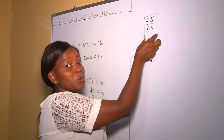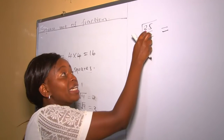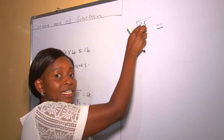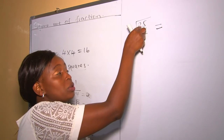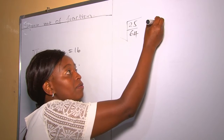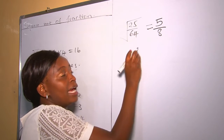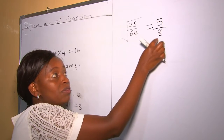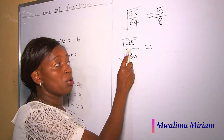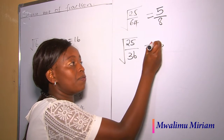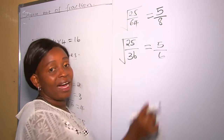Now let's solve questions involving fractions. Given a fraction, you take the square root of the numerator and the square root of the denominator separately. For example: square root of 25 over 64 — square root of 25 is 5, square root of 64 is 8, so the answer is 5 over 8. Another example: square root of 25 over 36 — square root of 25 is 5, square root of 36 is 6, so the answer is 5 over 6.